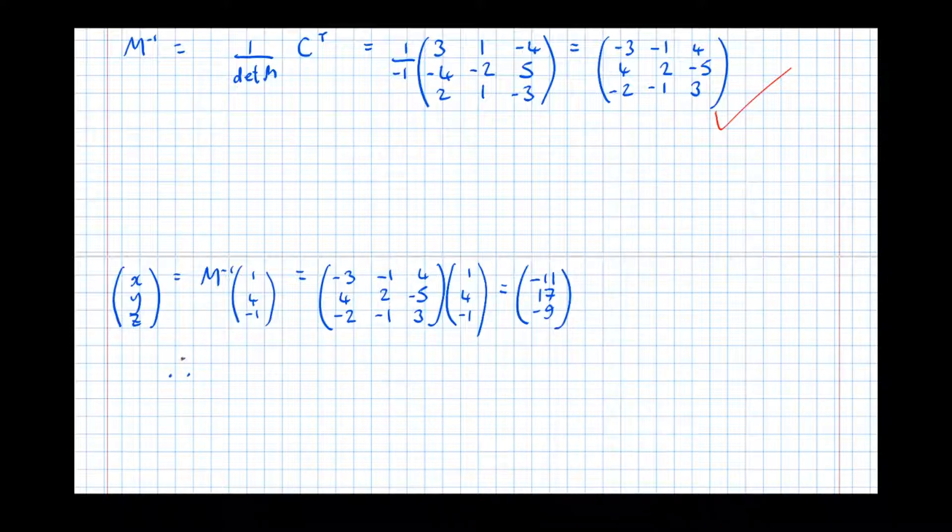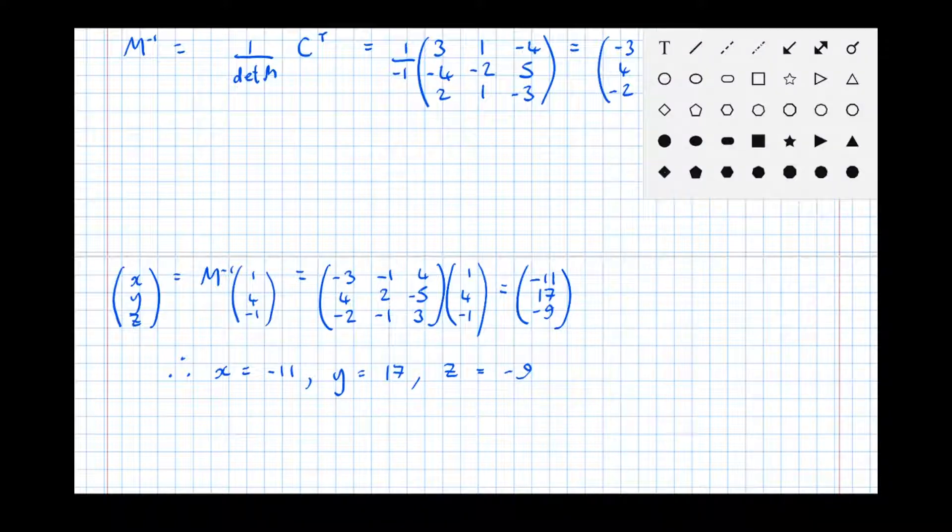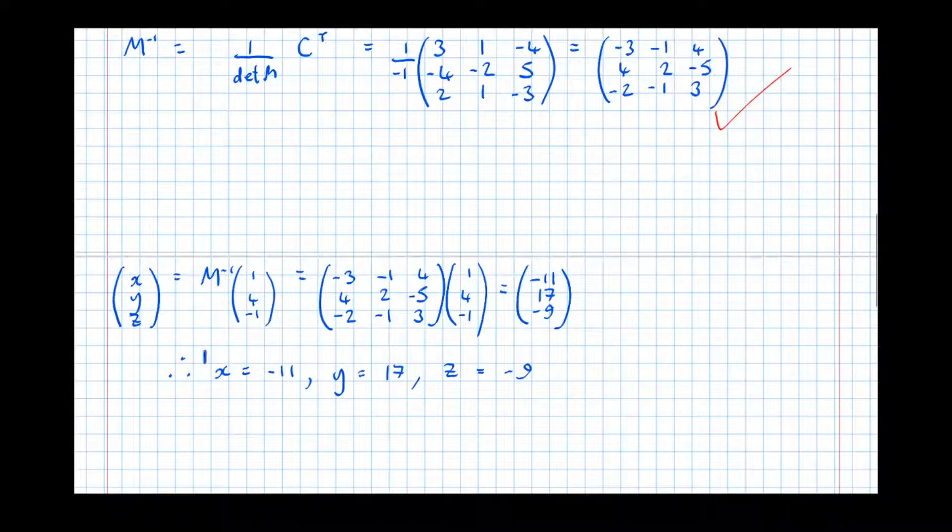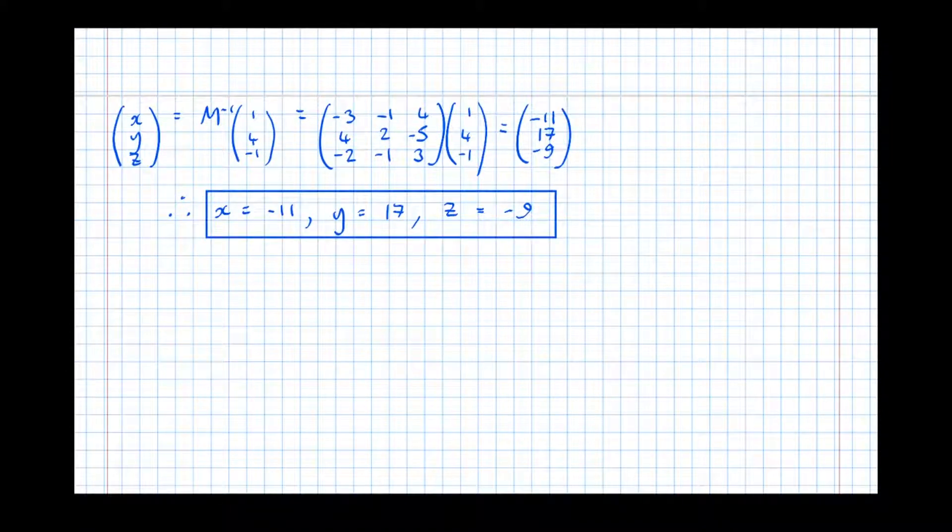So therefore, the top one, x equals -11, y equals 17, and z equals -9 are my answers. And as with any good answer, you should draw the marker's attention to it. And there we have the solution to the three simultaneous equations.